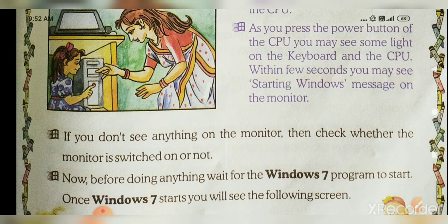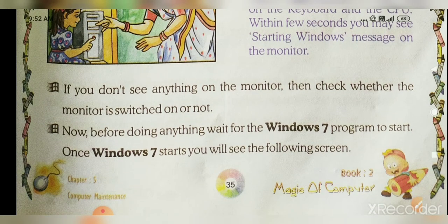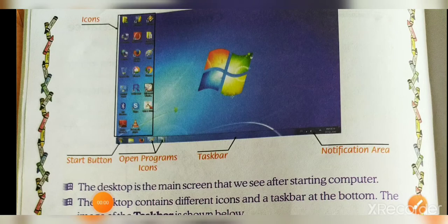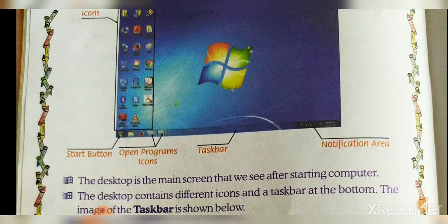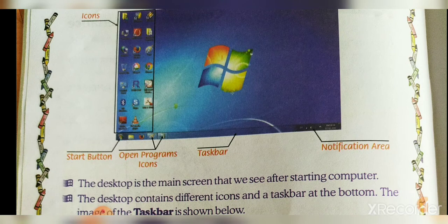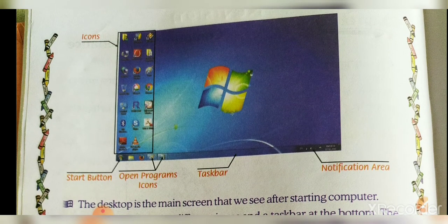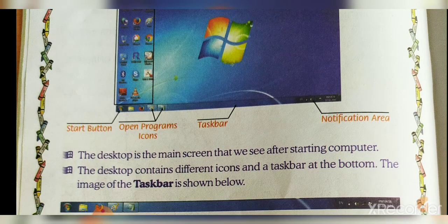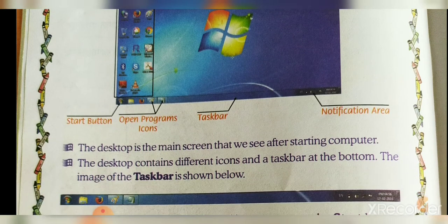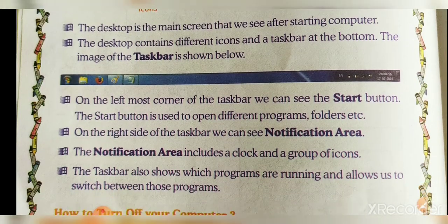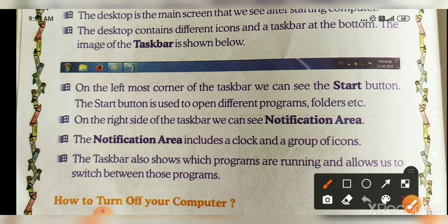Now look at the picture — you can see this type of screen on your computer. There are many buttons: the Start button, open program icons, taskbar, notification area, and all icons. The desktop is the main screen we see after starting the computer. It contains different icons and a taskbar at the bottom. On the left-most corner of the taskbar, we can see the Start button.